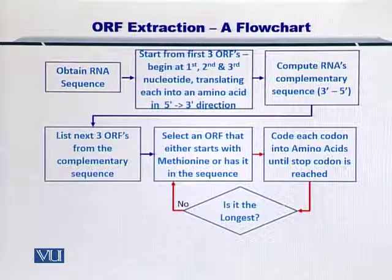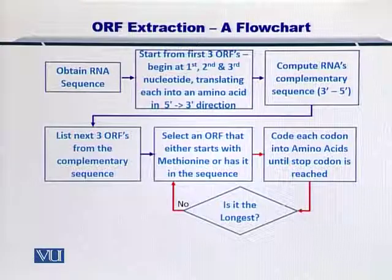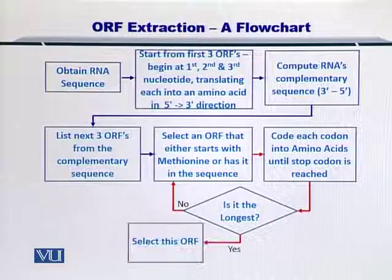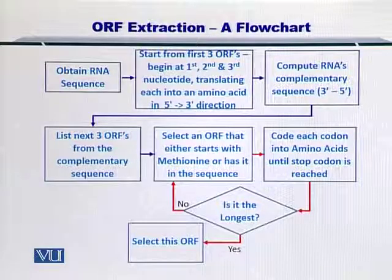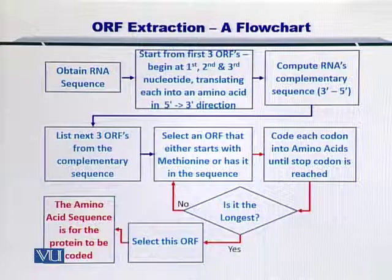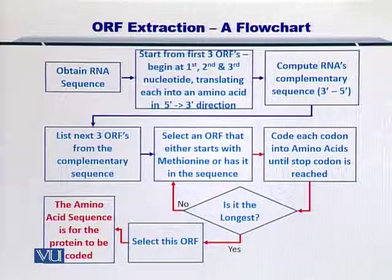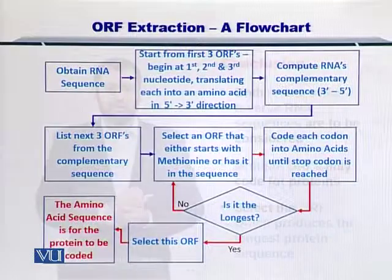You select ORF number four, five, or six — whichever forms the longest protein. Once you know which ORF forms the longest protein, you select that ORF and convert it into amino acids, and that is the protein that will be encoded by that portion of your RNA.